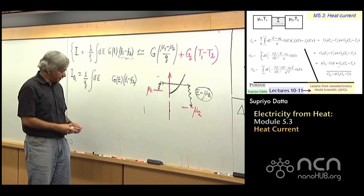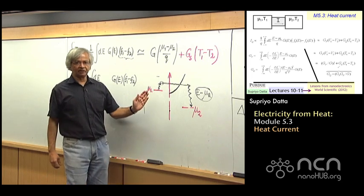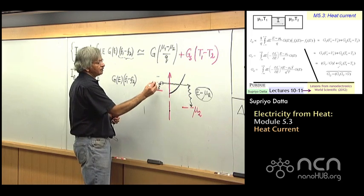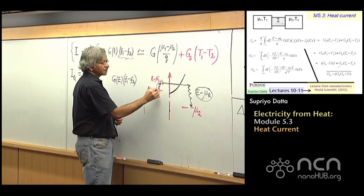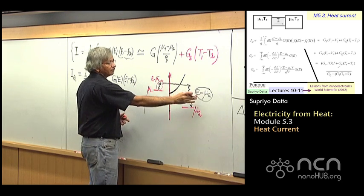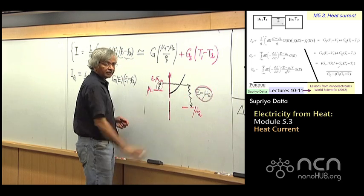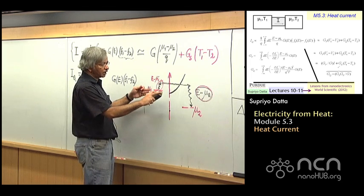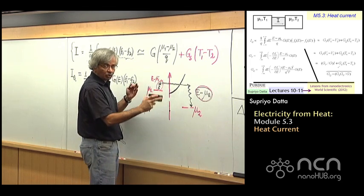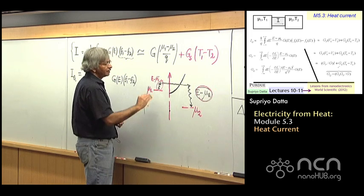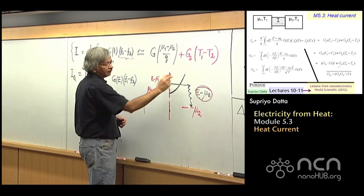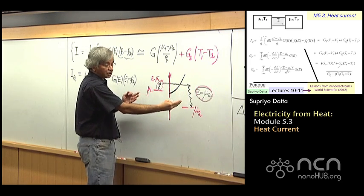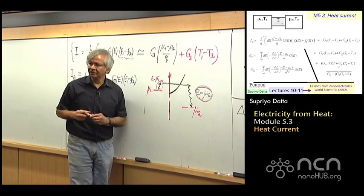And the basic observation is the following, that every time an electron goes from left to right, it takes an amount of heat E minus mu 1 from this contact, and dumps an amount of heat E minus mu 2 at that contact. And if we are talking of small voltage differences, where mu 1 and mu 2 are very, are almost the same, then you could say that roughly speaking, you're taking E minus mu 1 and dumping the same amount over there. Actually, it's dumping a little more. But let's say mu 1 and mu 2 are almost equal. Then you could say, well, it's basically dumping the same amount.